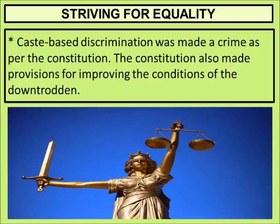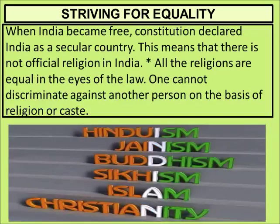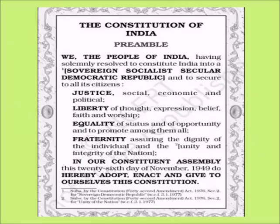The Constitution of India has made several provisions for improving the condition of the downtrodden — the lower-caste people. When India became free in 1947, the Constitution declared India as a secular country. Secular means without any official religion — India treats all religions equally. If you read the Constitution, you will find that everybody — upper caste, lower caste, Hindu, Muslim, boy, girl — all are equal before the law. Nobody can discriminate on the basis of gender, caste, religion, or color.